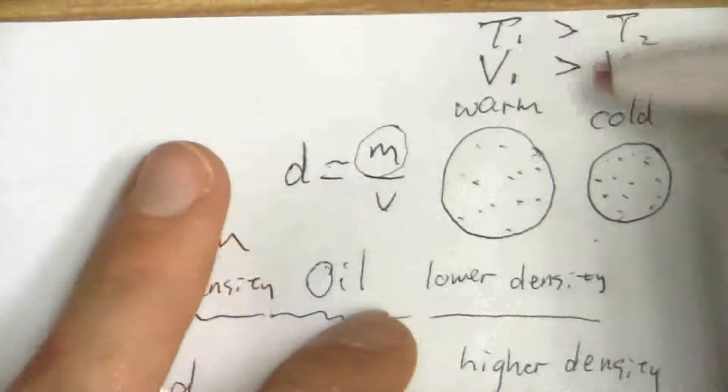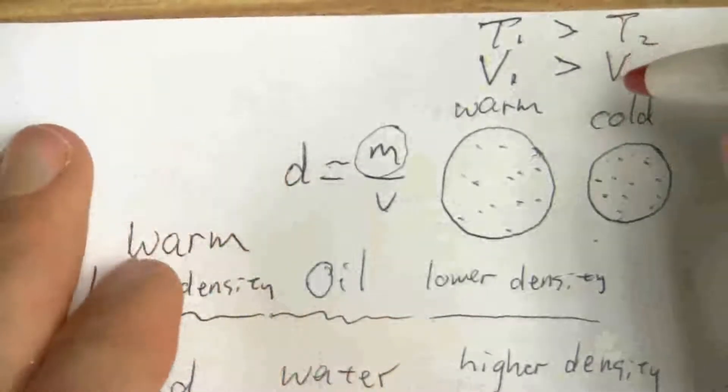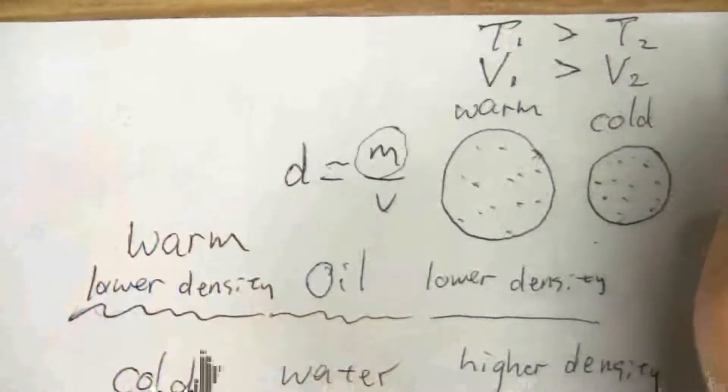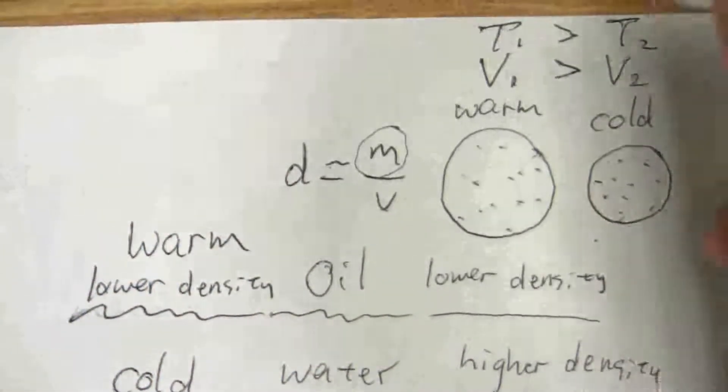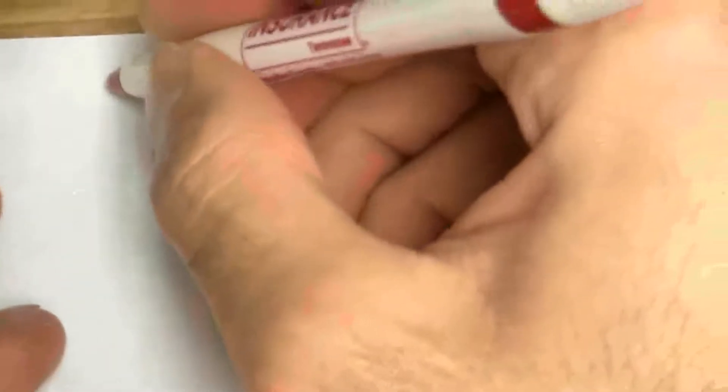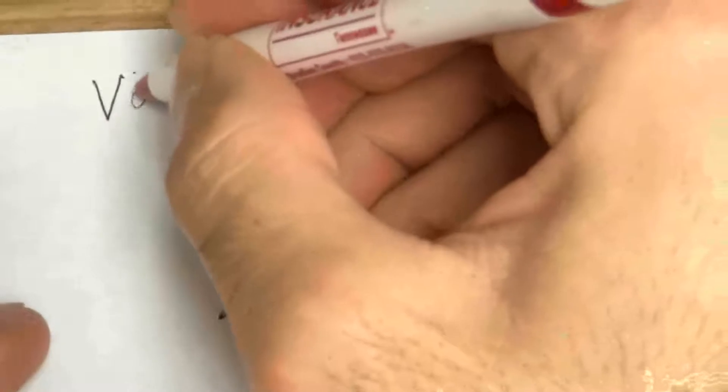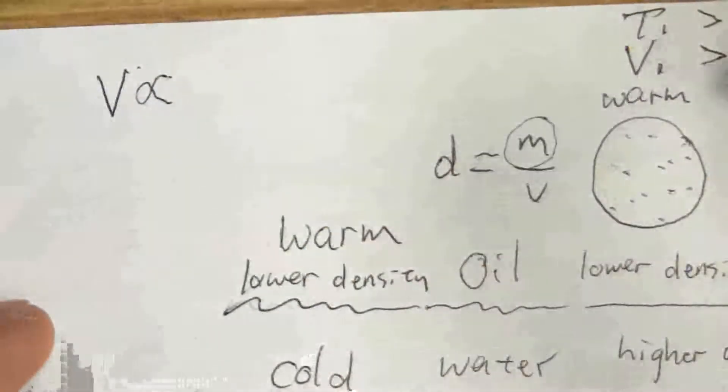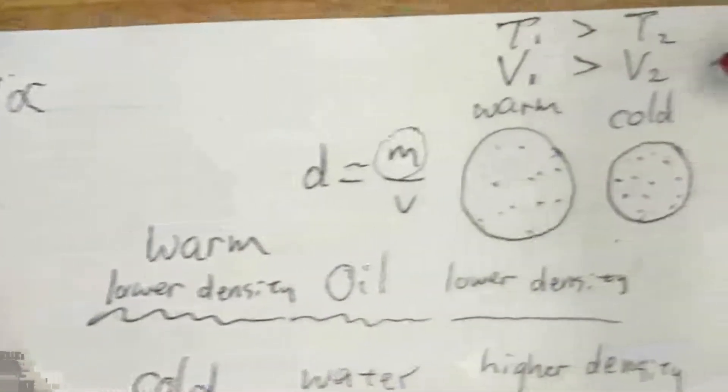So just like we did with Boyle's Law, we can do here with the volume and temperature. We can write a proportionality. So volume is proportional to, and what kind of proportionality is this going to be?